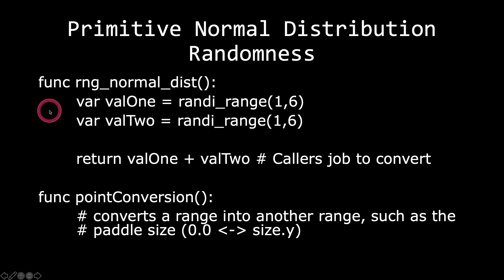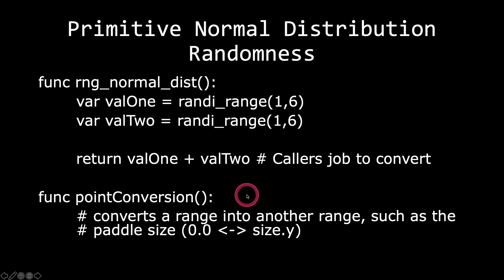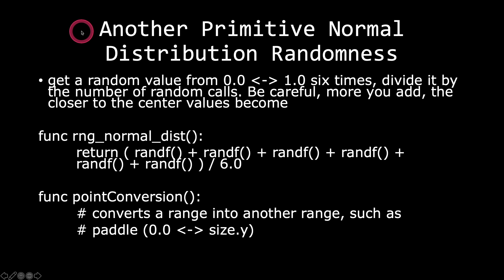In this case, we're doing random integer range one through six twice, adding the results, and returning the value back. It is the caller's job to convert that value. That would be the point conversion function, where we convert the returned value between zero and the size on the Y axis for our paddle. Another primitive normal distribution generator returns a random value between zero and one in decimal format — we get a random value between zero and one, six times, divided by the number of random calls.